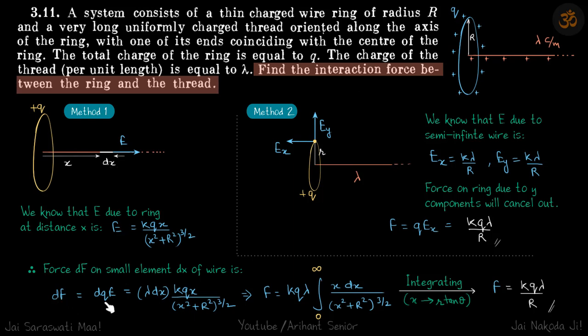Now we can find the small force: dF = dq × E, where dq is λdx and E is the field expression. We find the force by integrating this quantity, and x varies from 0 to infinity. Substituting x as r tan θ, the answer is F = kQλ/r.